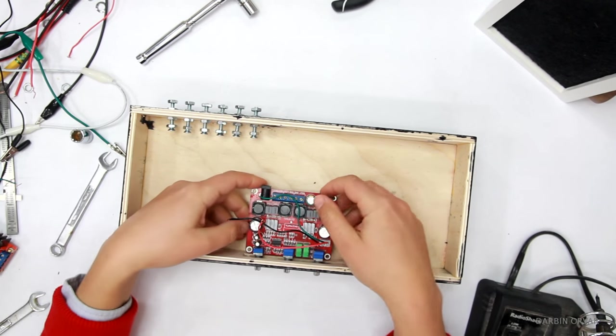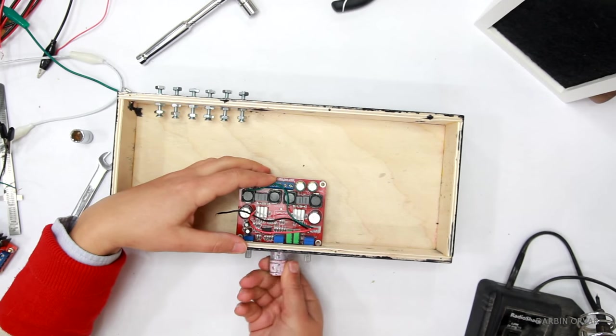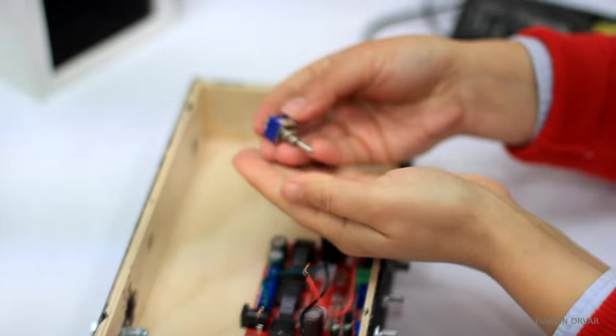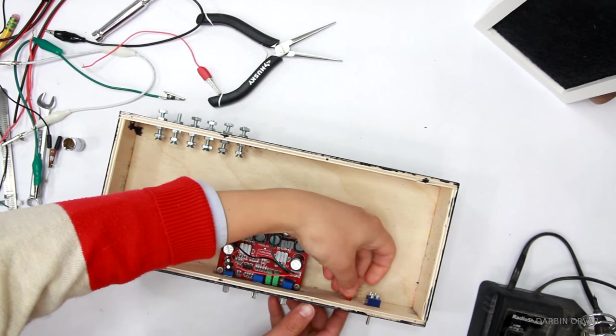Next, I'm securing the subwoofer amplifier in the middle, and I have holes drilled out for the knobs there. Putting in the switch and the lights so that I can turn the whole system on and off. Securing that with some hot glue.